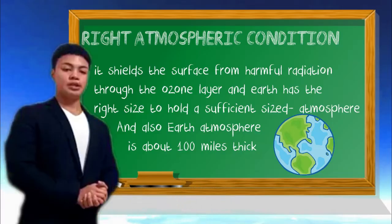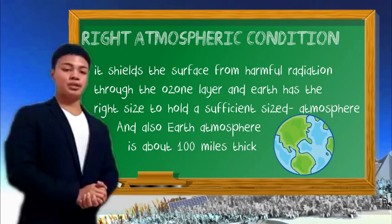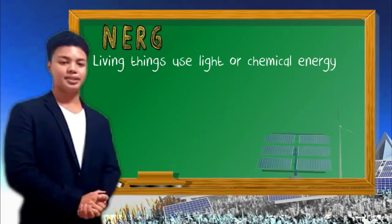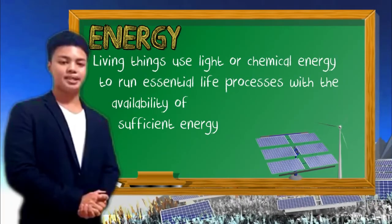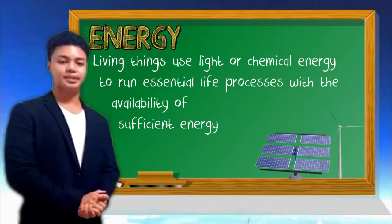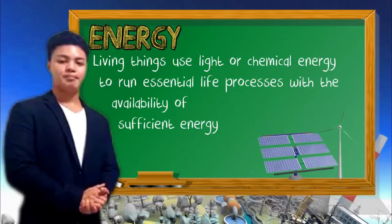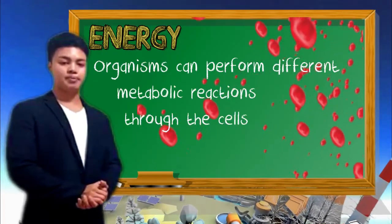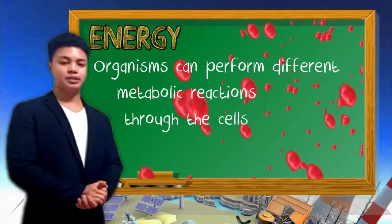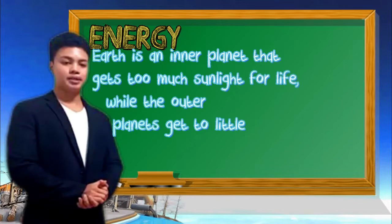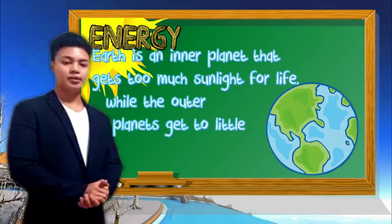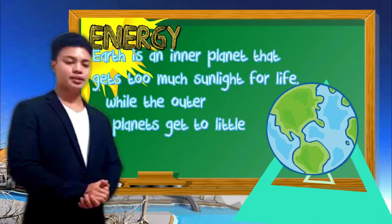Atmosphere. Earth's atmosphere is about 100 miles thick. Energy. Living things use light or chemical energy to run essential life processes. With the availability of sufficient energy, organisms can perform different metabolic reactions in the cells. Earth is an inner planet that gets just enough sunlight for life, while the outer planets get too little.